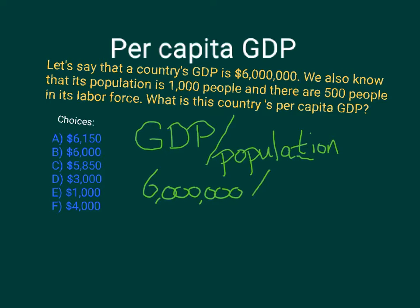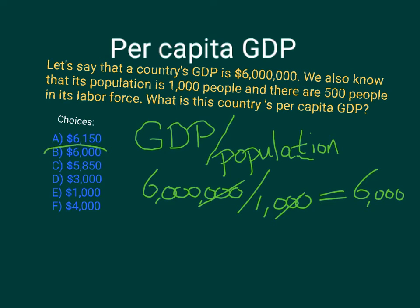We divide 6,000,000 by the population of 1,000. We get three zeros at the bottom and three zeros at the top — cancel those out, and the answer is six thousand. In other words, choice B.